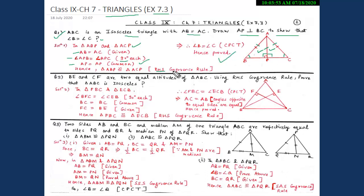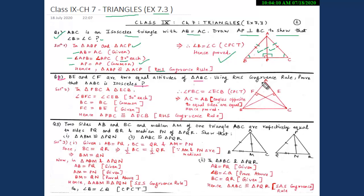Our second question for today is: BE and CF are two equal altitudes of triangle ABC. Using the RHS congruency rule, we have to prove that triangle ABC is isosceles. In this question, again the figure is not given.